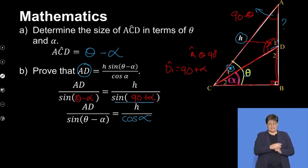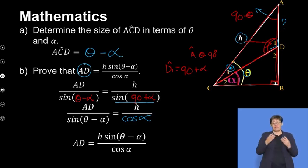Now we're going to find AD. We're going to make AD the subject of the formula, which means we're going to multiply both sides by sine of theta minus alpha. We get h sine(theta minus alpha) over cos alpha. That's exactly what they asked us to prove. We've proved that AD is equal to the expression that was asked for.